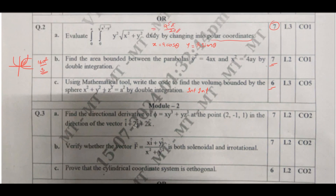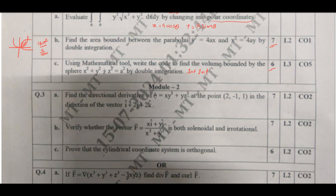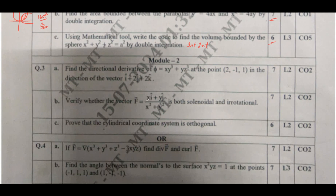Going to question number 3a: find the directional derivative of phi — compute del phi and use the given direction d, then apply the directional derivative formula to get the solution. Also verify whether the given vector f is solenoidal and irrotational. For solenoidal, del·f = 0; for irrotational, del×f = 0. Each part carries 7 marks.